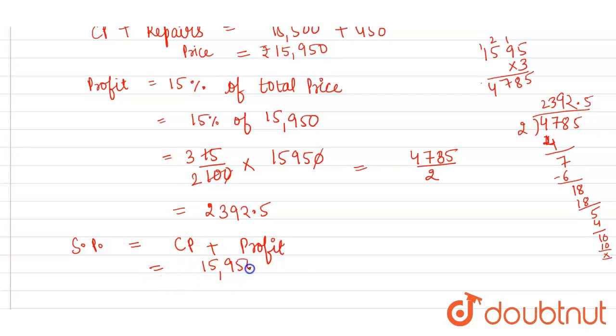So this is equal to: 0 plus 5 is 5; 5 plus 2 is 7; 9 plus 9 is 18, 8 carry 1; 5 plus 3 plus 1 is 9; 1 plus 2 is 3; 1 plus 1 is 2. So selling price of the article will be Rs. 18,342.5, and this is the required answer for the given question.